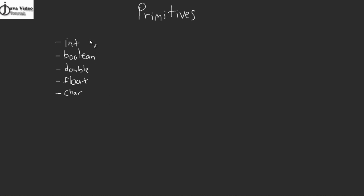The special syntax I mentioned is that they're all lowercase — int, boolean, double, float, char. All of these are lowercase letters, and that represents the primitive type. Now, I said I was going to compare and contrast the primitives against an object. These are known as the object counterparts, or the wrapper objects.